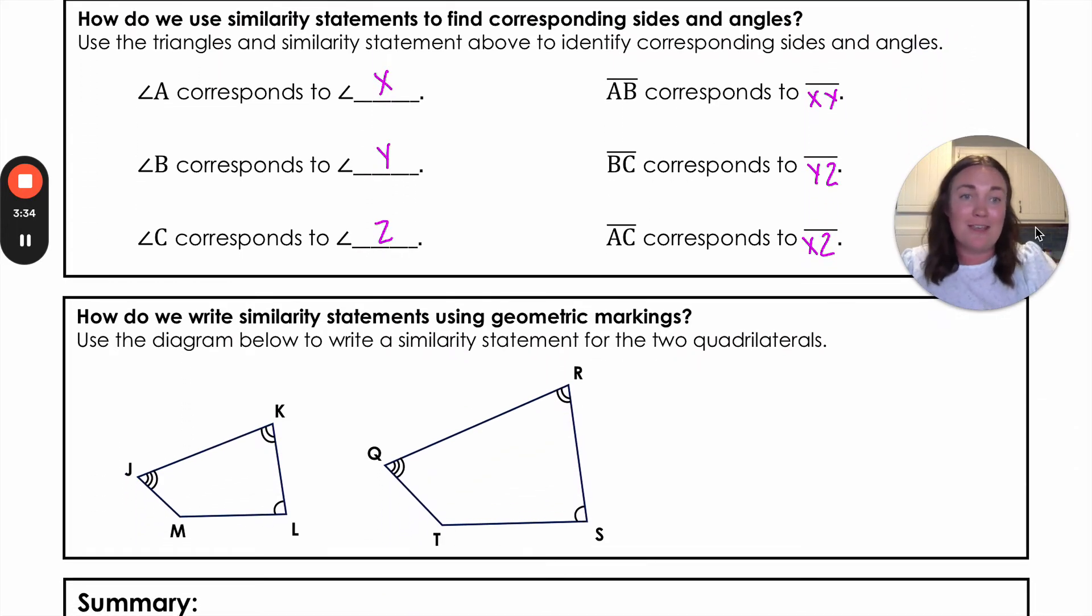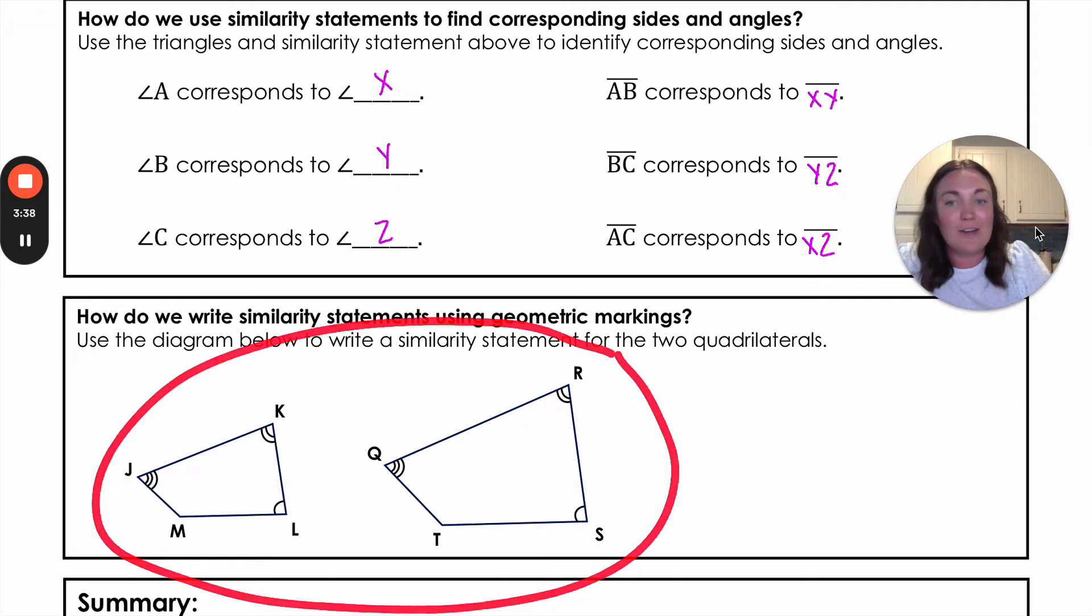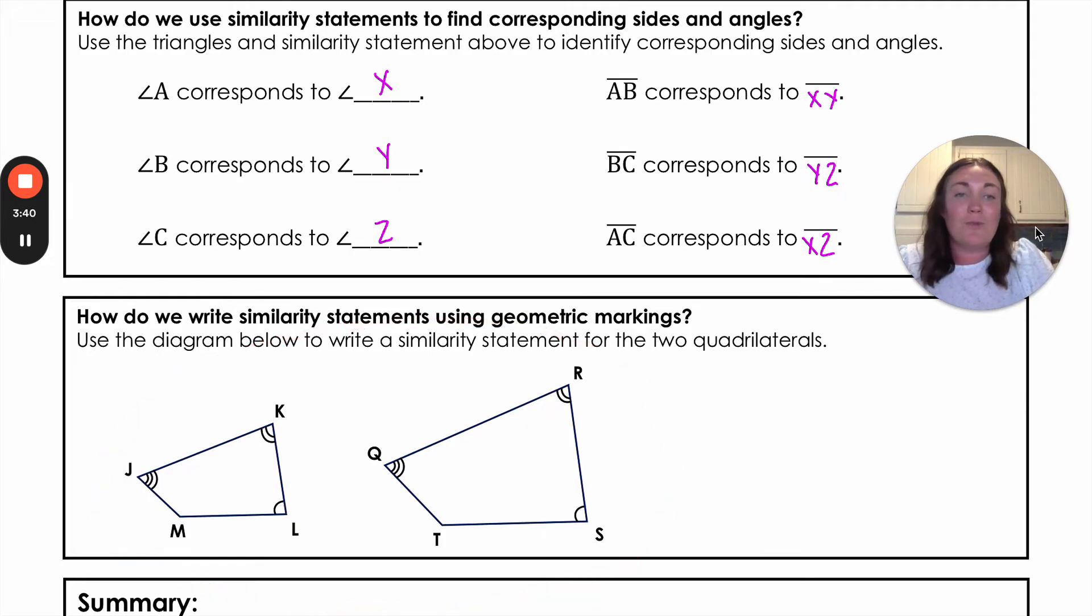Last thing is sometimes they don't give you a similarity statement. They just give you a diagram with those two figures in it. And so they want you to write a similarity statement from there. What we're going to do now is we're going to look at those markings. I know that if something has one marking that is congruent to whatever else has that same one marking. Two is going to correspond with two. Three with three, and so on and so forth.